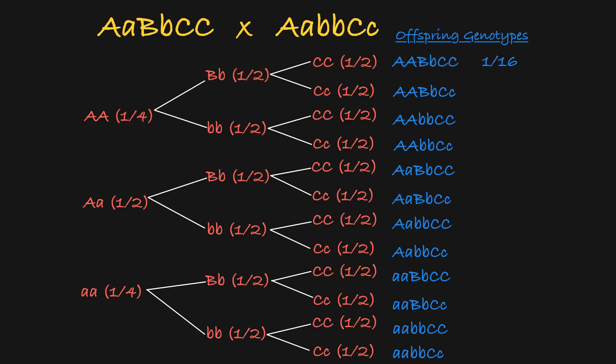What if I wanted to know the probability of offspring with this genotype? That probability is one half times one half times one half, which is one eighth.